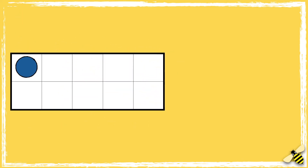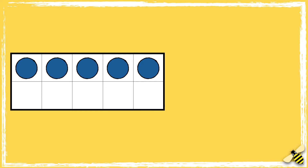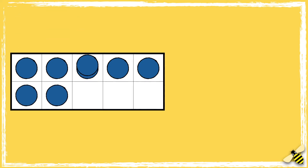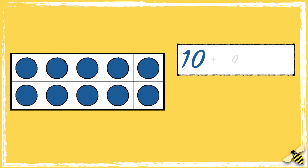1, 2, 3, 4, 5, 6, 7, 8, 9, 10. So this shows that 10 add 0 equals 10.